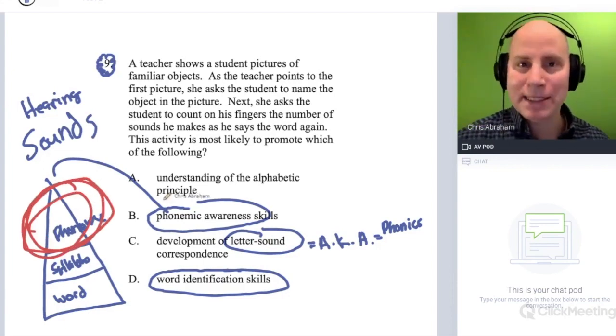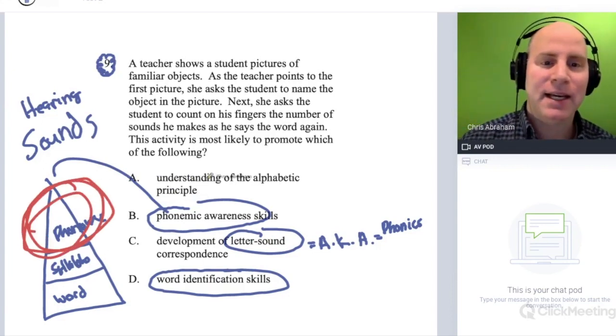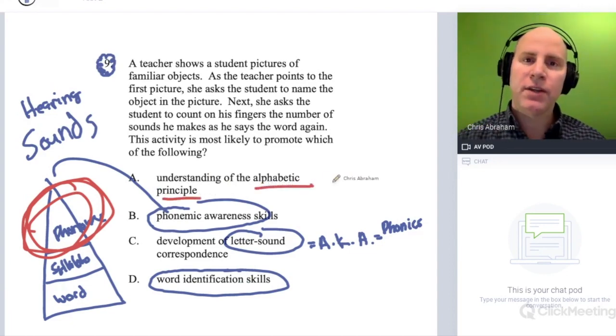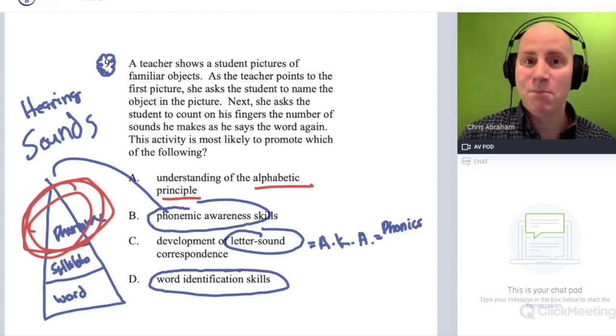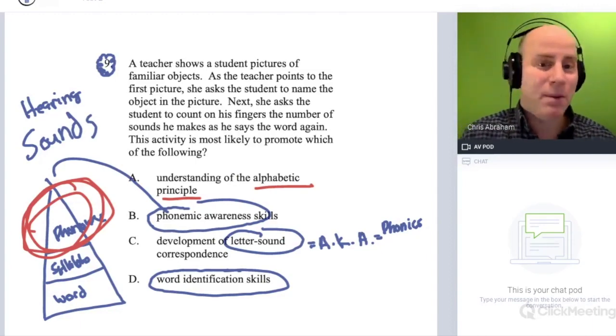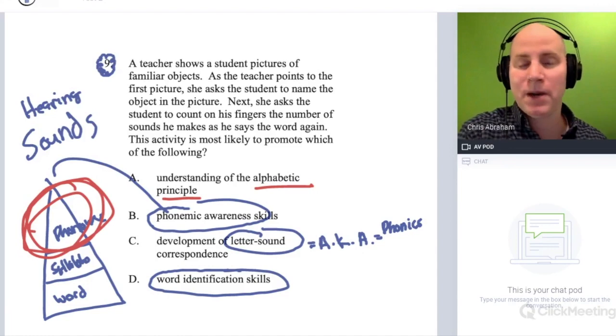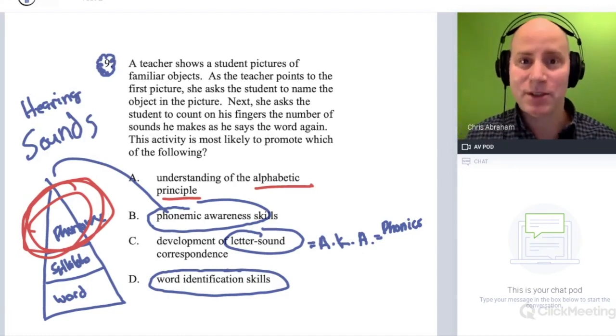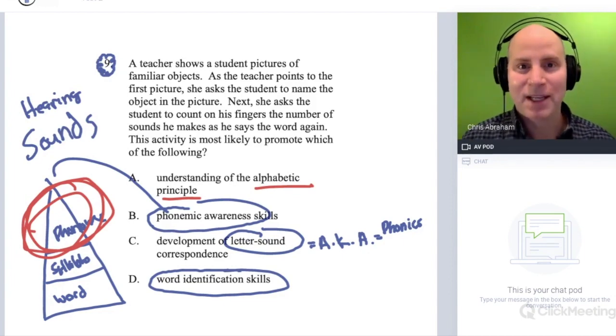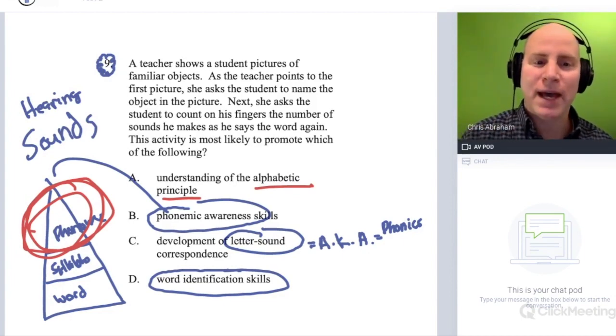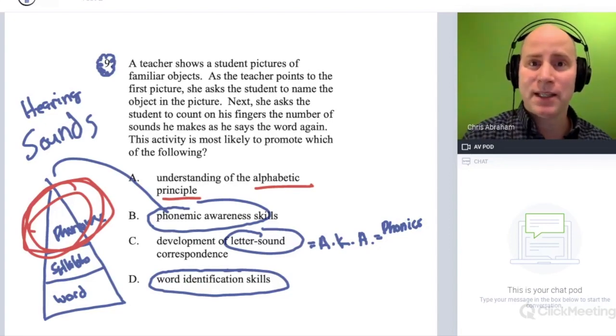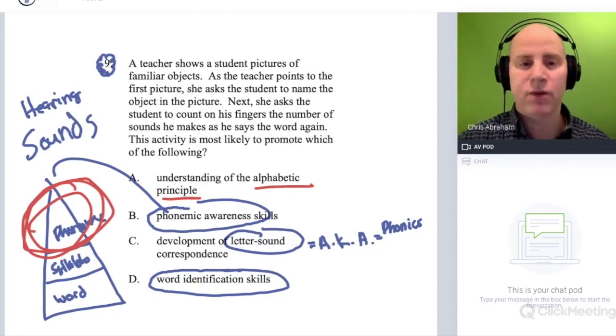And then C) understanding the alphabetic principle. If you've done these videos with me, you've seen all these appear multiple times. We've seen alphabetic principle appear on these phonemic awareness and phonological awareness questions, and every time it's been crossed off. You need to know that when we're talking about pure sound, some of these things are going to get crossed off. But let's just review the alphabetic principle.